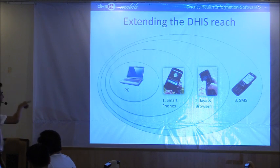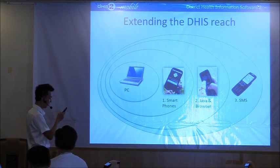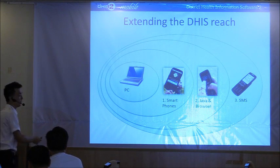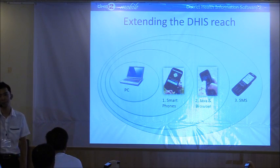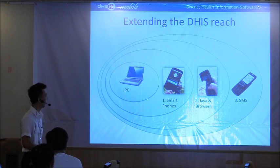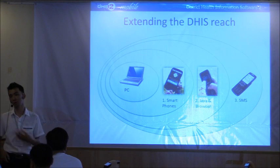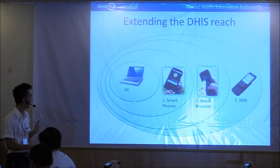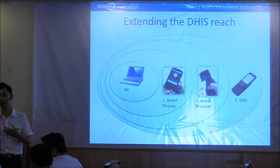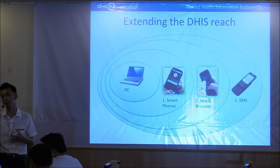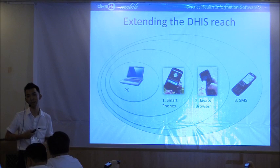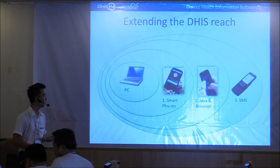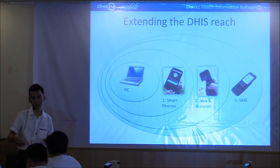Looking at this diagram: before DHIS2 mobile, we already had the desktop application — moving from Microsoft Access to a web application was a big step — but it wasn't enough because there's still the smartphone, Java phone, browser, and SMS areas. We're trying to have a solution for all of these areas and leave no one behind. The further right you go, the less capacity the device has, so we try our best to get the most out of what each device can offer.